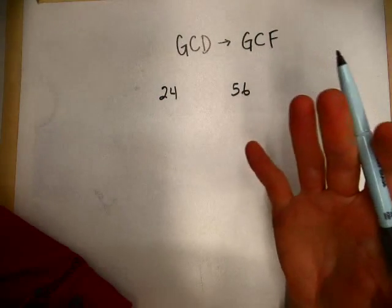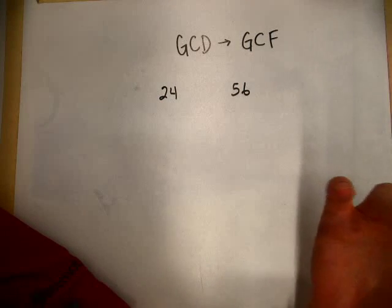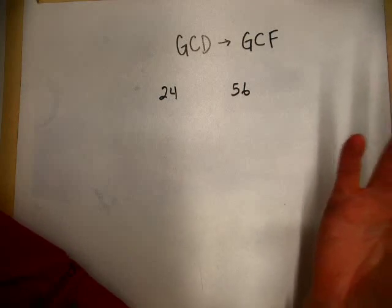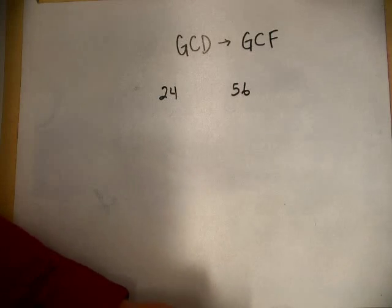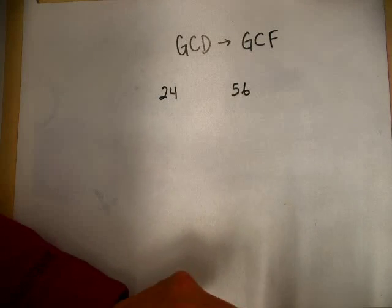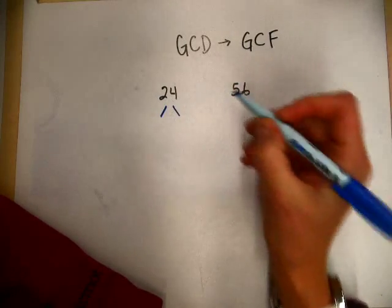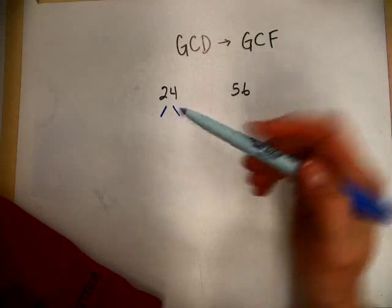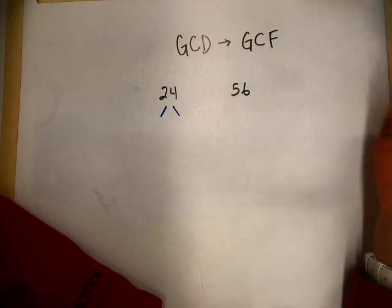You can do this a couple of different ways. I'm going to show you this tricky little way using factor trees. So we've got 24 and 56. I think you've done factor trees before, but basically the idea is to figure out what factors go into 24—what times what equals 24.